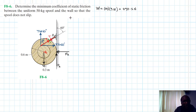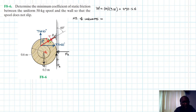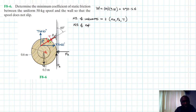Counting the unknowns: we have NA, FA, and T — that is three unknowns. The number of equations of equilibrium is also three, so this is a Type 1 problem.